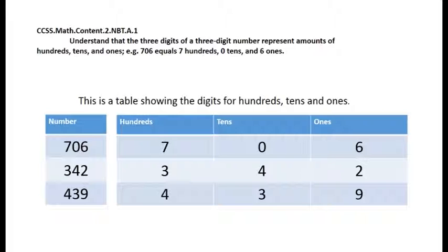On the right side, you will see these numbers broken down into hundreds, tens, and ones. These are by place value. If we look at the second row, we see that the number 342 can be broken down to 3 hundreds, 4 tens, and 2 ones.